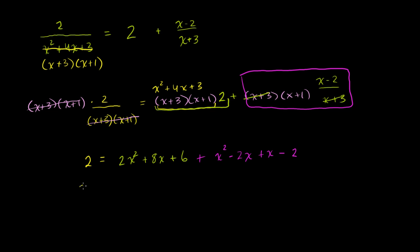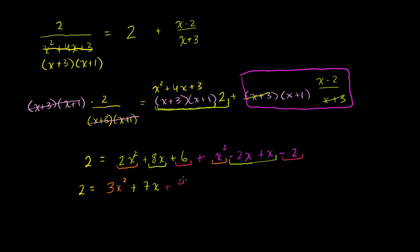Now we can simplify. The left-hand side is still 2. On the right-hand side, looking at the x squared terms: we have 2x squared and x squared, which gives 3x squared. For the x terms: we have 8x and then negative 2x plus x, which is negative x, so altogether that's plus 7x. And then we have 6 minus 2, which is plus 4. Now let's subtract 2 from both sides, and we are left with 0 equals 3x squared plus 7x plus 2.